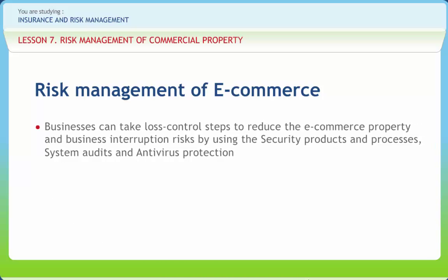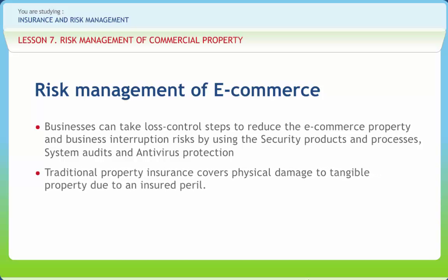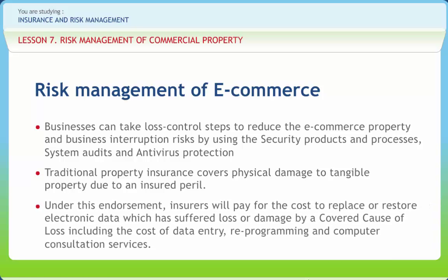Businesses can take loss control steps to reduce e-commerce property and business interruption risk by using security products and processes, system audits and antivirus protection. Businesses today buy electronic security systems and develop many steps to reduce the risk of data and hardware losses. Firms conduct regular system audits to test for breaches in network security. Traditional property insurance covers physical damage to tangible property due to an insured peril. Electronic data can be considered property in most instances, but standard commercial insurance policies contain exclusions that explicitly invalidate coverage for exposures relating to the use of technology. Under this endorsement, insurers will pay for the cost to replace or restore electronic data which has suffered loss or damage by a covered cause of loss, including the cost of data entry, reprogramming and computer consultation services.